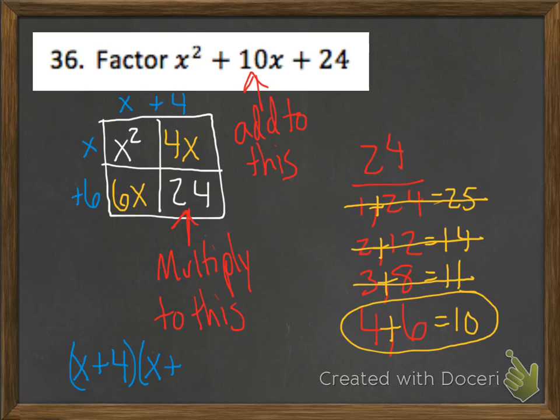I'm going to write those in two parentheses multiplied together: (x + 4)(x + 6).